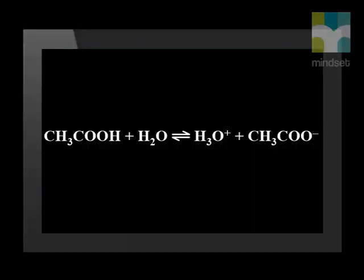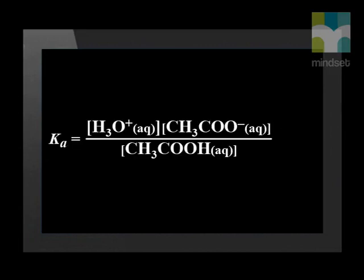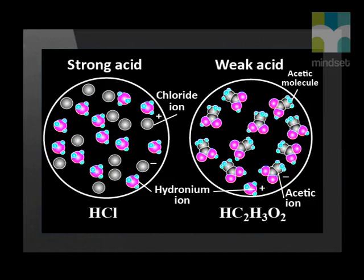Let's consider a weak acid. Weak acids do not ionize completely in water. The ionization chemical reaction of acetic acid is given as: acetic acid ionizes in water to form a hydronium ion and an acetate ion. The ionization constant expression is given as the concentration of the hydronium ion multiplied by the concentration of the acetate ion divided by the concentration of acetic acid.